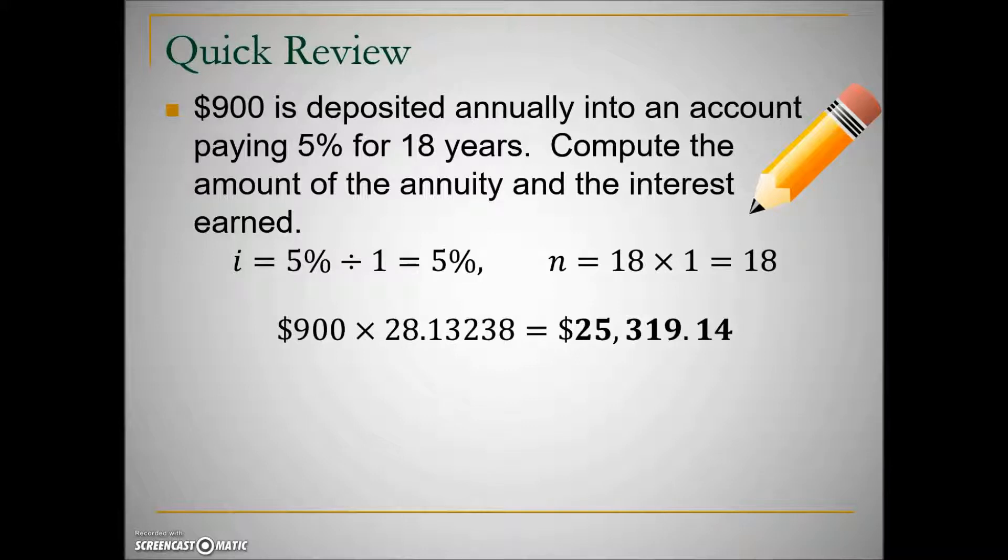To calculate the interest earned, we need to first determine how much money was deposited in the account. That's $900 annually, in other words each year for 18 years, and we have that here. Once that's determined, we will subtract those deposits from the annuity amount to give us the difference or the interest earned. So a little over $9,000 is the interest earned on this account over 18 years.